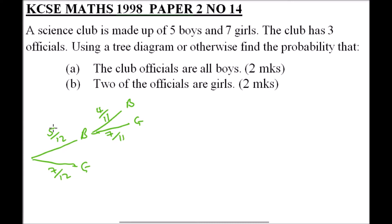On the other branch, if a girl is selected first, then a boy may be selected in the second round or a girl may be selected. The number of boys remains the same, so we have 5 out of 11. Since one girl was already selected, we have six girls remaining to be selected out of 11.